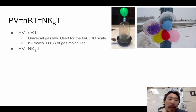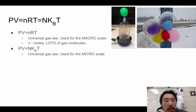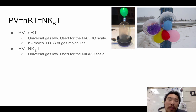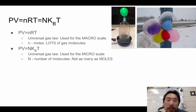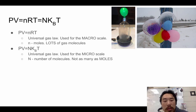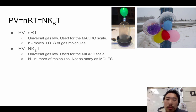We also have PV = Nk_BT, where capital N is the number of molecules and k_B is the Boltzmann constant. This is the universal gas law for the microscale, used when you are given a specific number of molecules. Moles is a very large number, so when not talking about a very large amount, they will give you the number of molecules — or you might have to find it — and that's the equation you use.